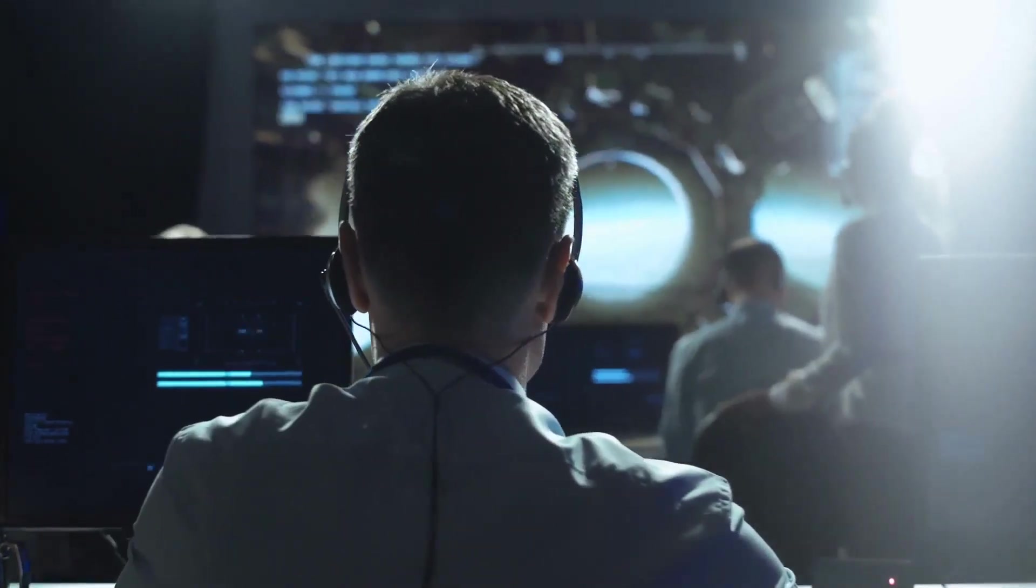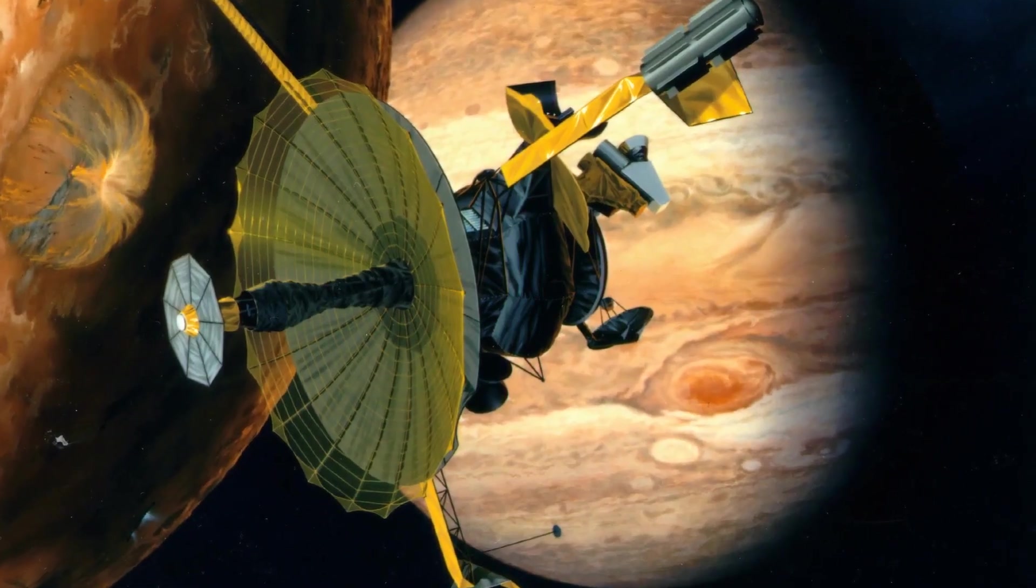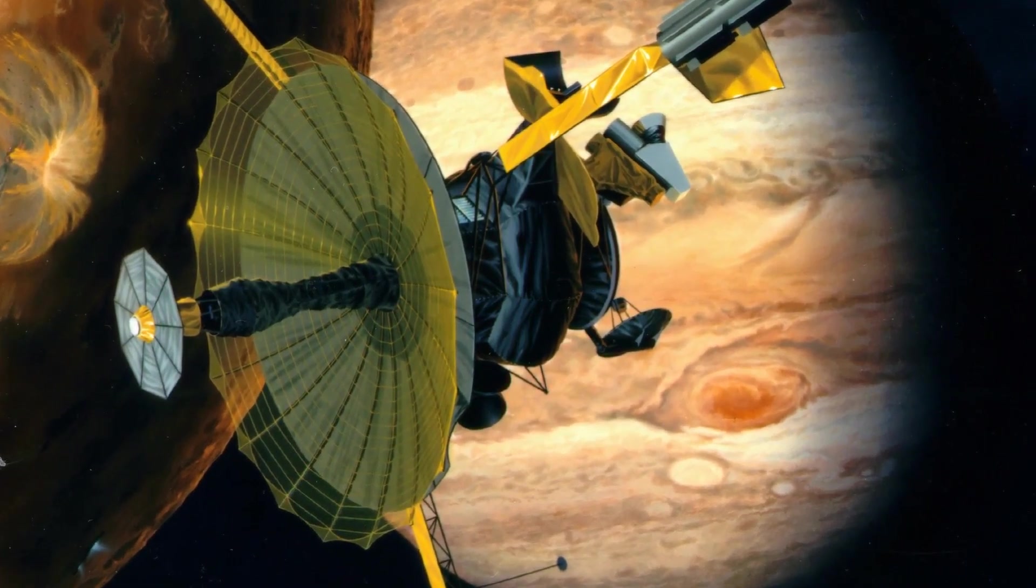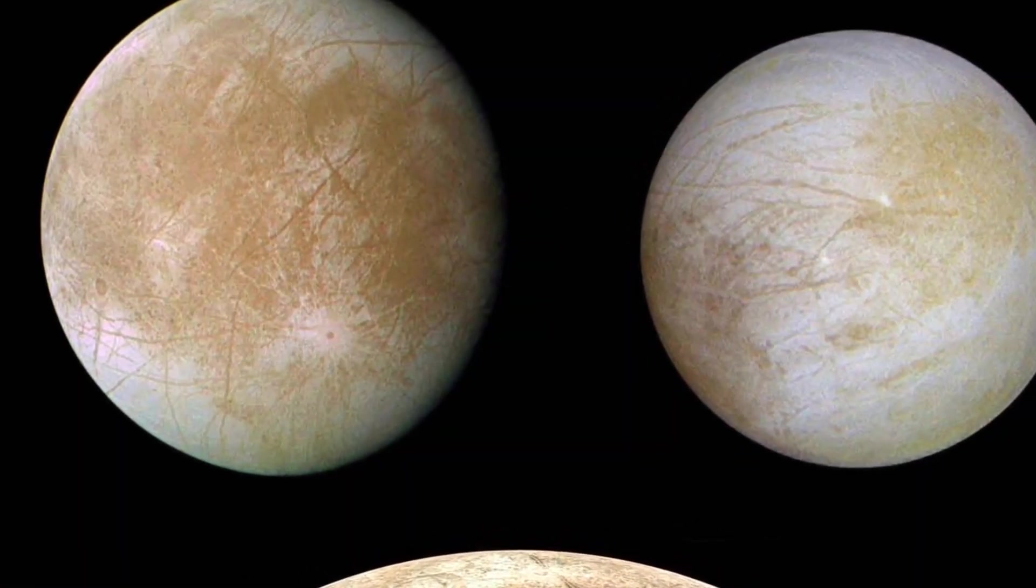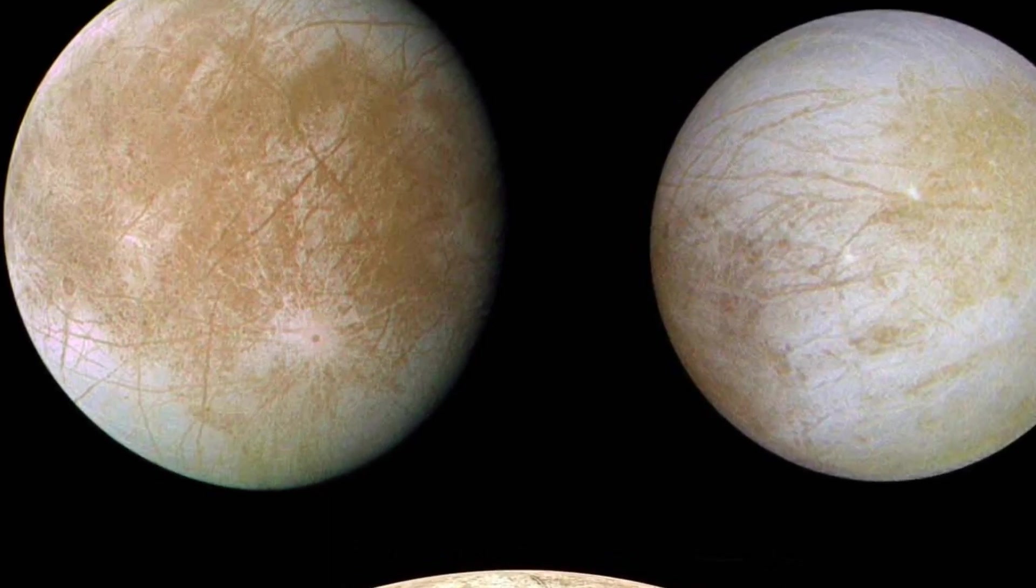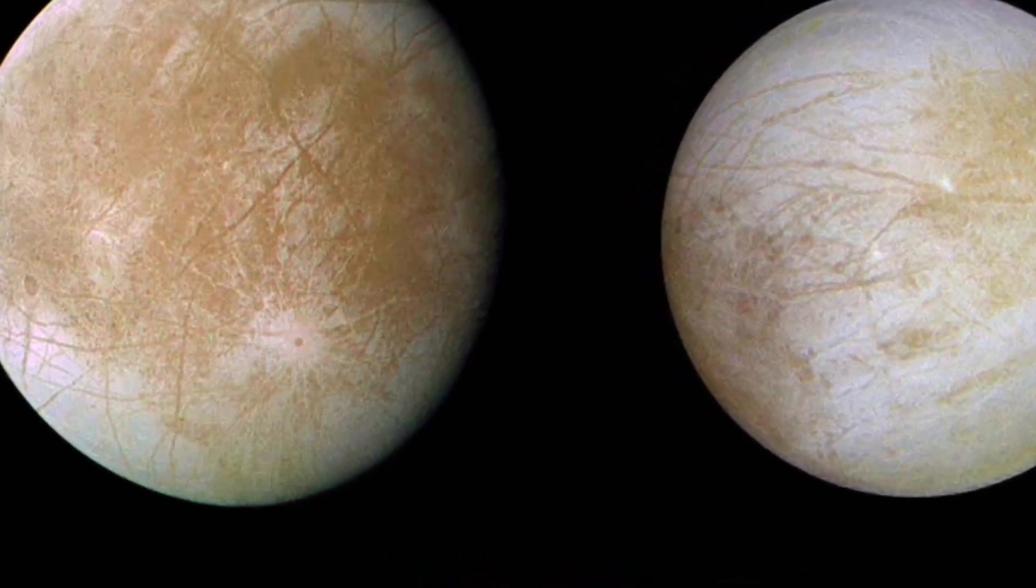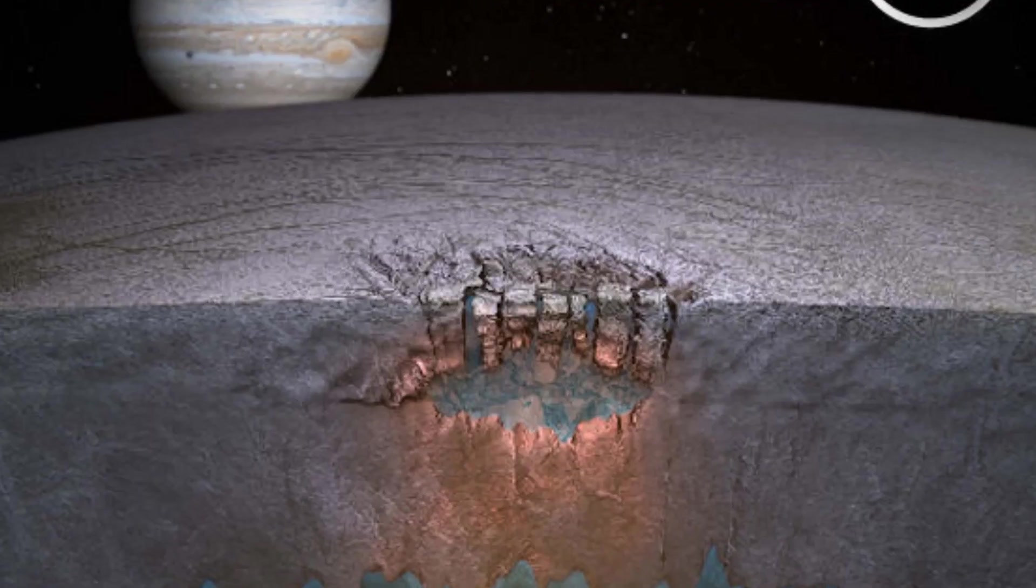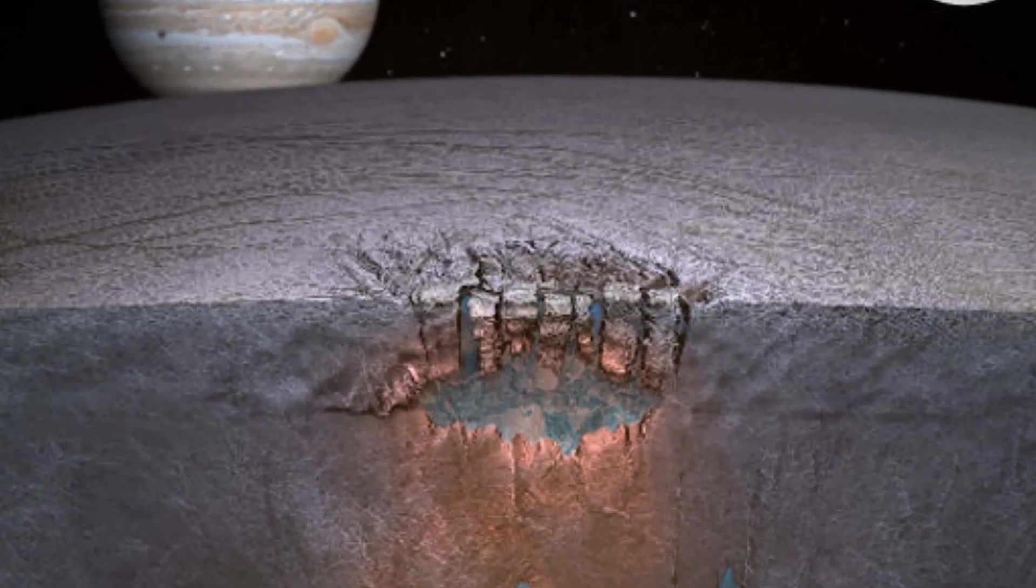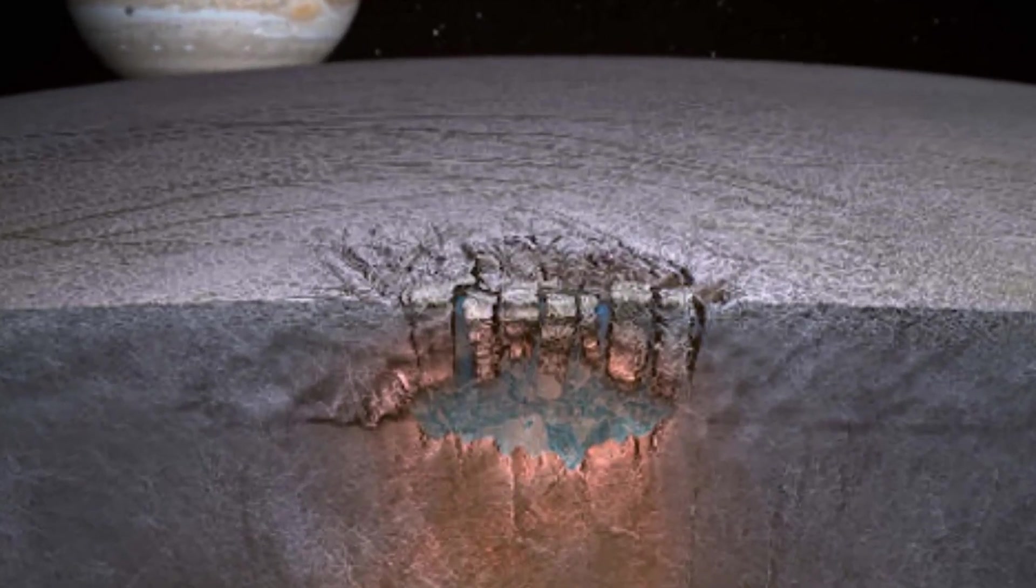The desire to know more about what lay beneath Europa's surface led to the Galileo mission, which entered orbit around Jupiter in 1995. Though the mission was supposed to cover all four Galilean moons, the photos of Europa were so intriguing that the mission was extended and 12 more flybys were added. The Galileo mission sealed the belief that an ocean lay beneath Europa's icy crust.